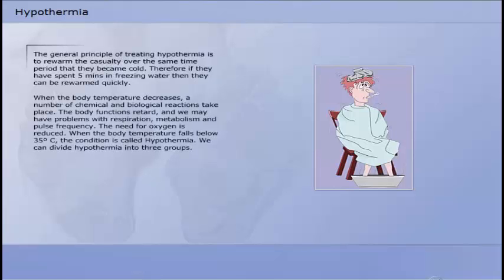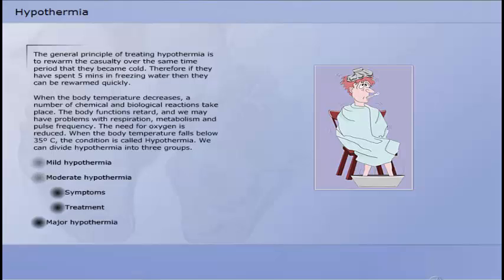The general principle of treating hypothermia is to rewarm the casualty over the same time period that they became cold. Therefore, if they have spent five minutes in freezing water, then they can be rewarmed quickly. When the body temperature decreases, a number of chemical and biological reactions take place. The body functions retard and we may have problems with respiration, metabolism and pulse frequency. The need for oxygen is reduced. When the body temperature falls below 35 degrees Celsius, the condition is called hypothermia.